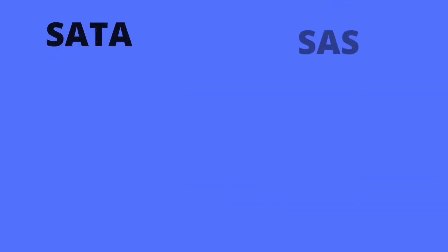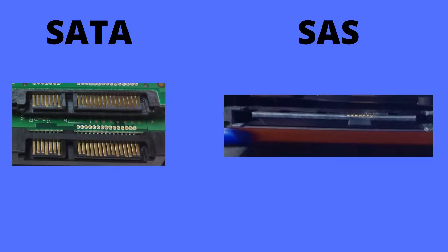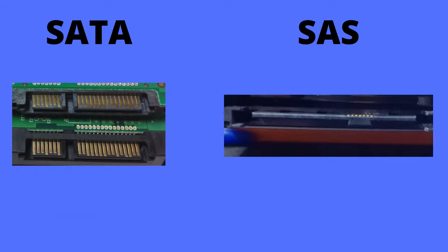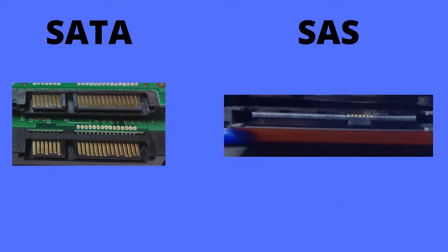The first main but small difference between SATA and SAS is the actual connector. Although they look very similar there is a slight difference which you can see here. On the left we have the SATA connector — there is actually a gap between the data and the power side. On the right side you can see the SAS connector, which is actually just one physical connector, not two as with SATA.